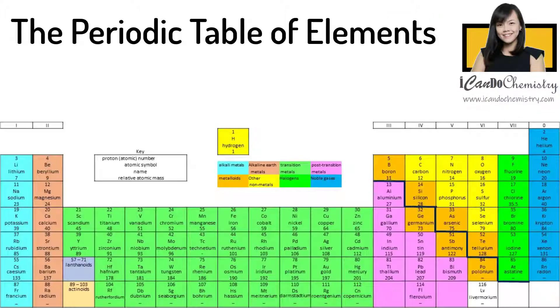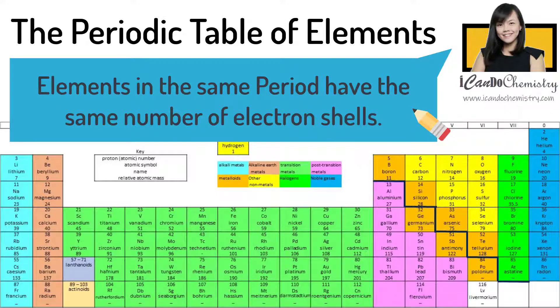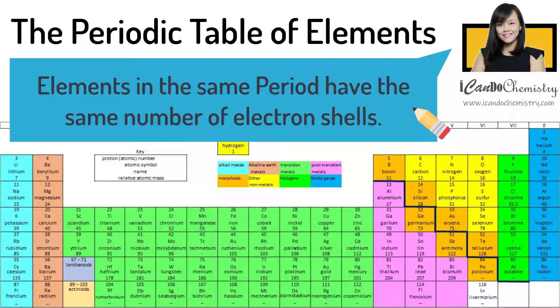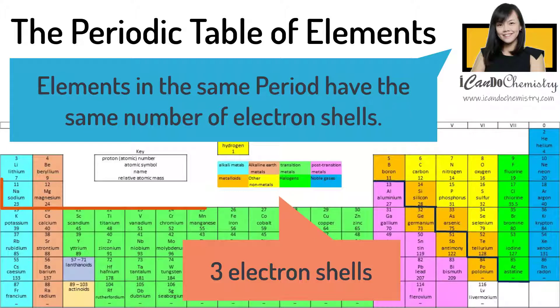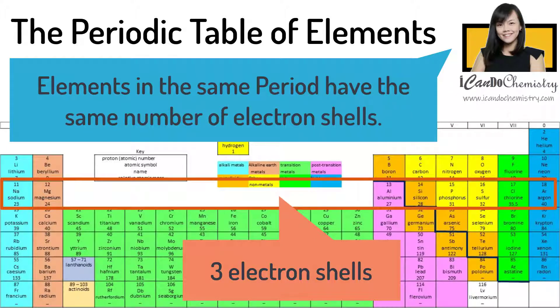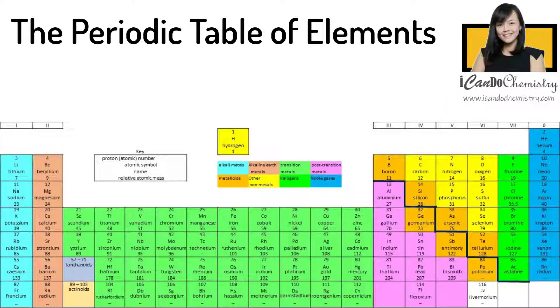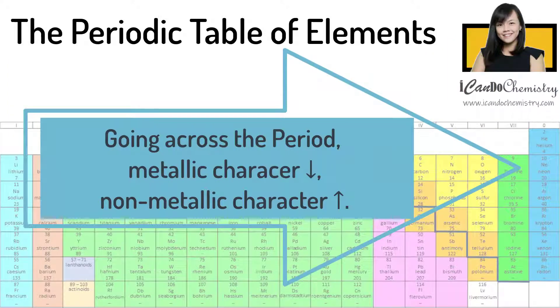Now what about period? What can we say about the elements in the same period? Now all the elements in the same period, they have the same number of electron shells. For example, all elements from period 3 have 3 electron shells. On going across a period from left to right, the metallic character decreases,